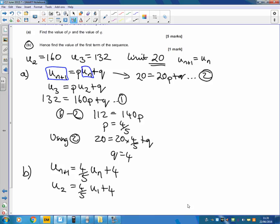We know the second term is 160. Now we have an equation where the only missing term is u_1, the first term. Rearranging gives us that the first term is 195.